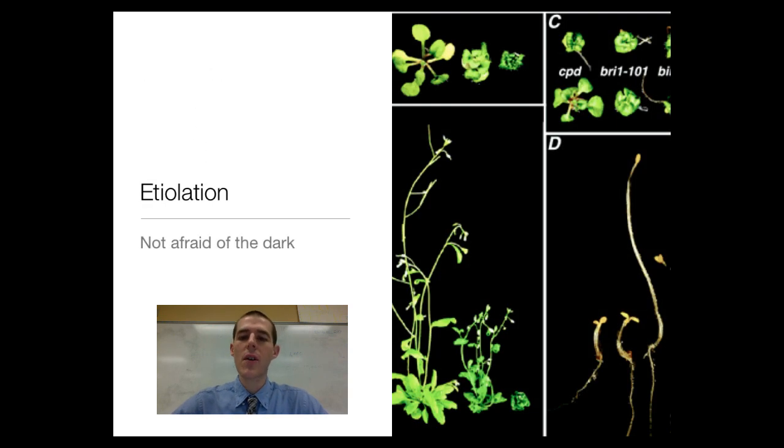First word you need to know is etiolation. This is essentially the process that plants go through when they are growing in the dark. If you've ever left a potato in a cupboard and it started to sprout little white sprouts out of its eyes, that is etiolation. It's an adaptation plants have for growing in the dark, particularly underground. In etiolation, plant shoots and stems grow very rapidly. Leaves don't really develop. They don't turn green.